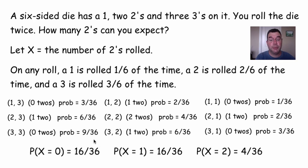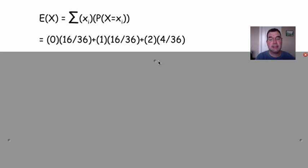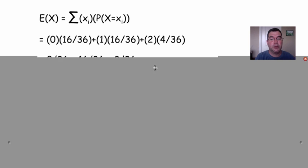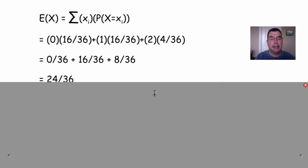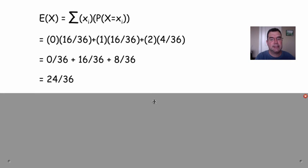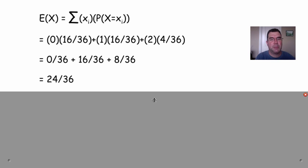So the probability of no 2s would be 16 out of 36. The probability of one 2 would be 16 out of 36, and the probability of two 2s would be 4 out of 36. So what I do is the same thing that I did before, I take each x and multiply it by the probability associated with that x. So I am multiplying those pairs together, adding it all up, and I get a weird number like 24 out of 36. So that's how many 2s I'm expecting to see.